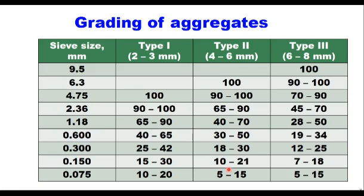The grading of aggregates specified for Type 1, Type 2, and Type 3 are given in a table. For Type 1 the nominal size is 2.36 mm, for Type 2 it is 4.75 mm, and for Type 3 it is 6.3 mm. The grading for each type is well-graded aggregate. If more than one aggregate is to be used, they should be proportioned suitably to achieve the required grading for the slurry seal.